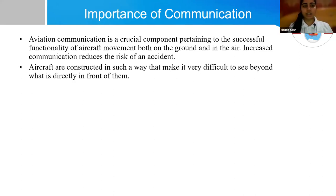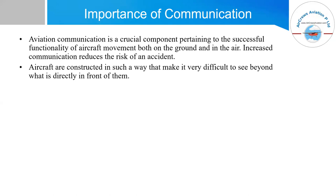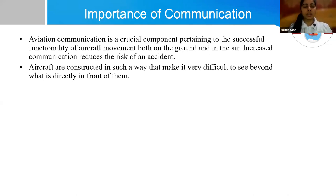Aircraft are constructed in such a way that makes it very difficult to see beyond what is directly in front of them. So in such a case, when a pilot is flying and visibility is really low and the pilot can't see outside the cockpit, he has to refer to the air traffic controller as well as some computer systems to get a perfect routing and direction. ATC is there to provide proper guidance and navigation.